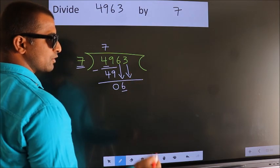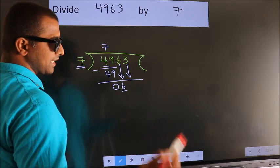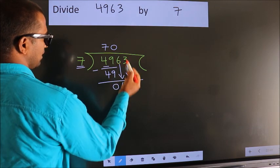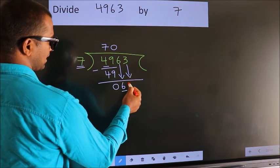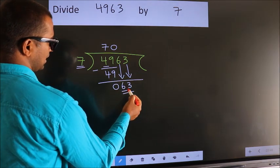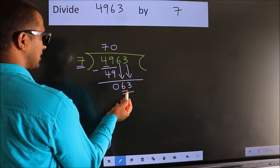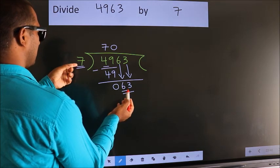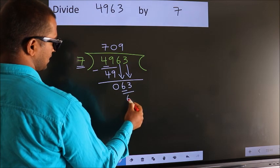And the rule to bring down the second number is put 0 here. Then only we can bring down this number. So 63. When do we get 63? In 7 table. 7 nines 63.